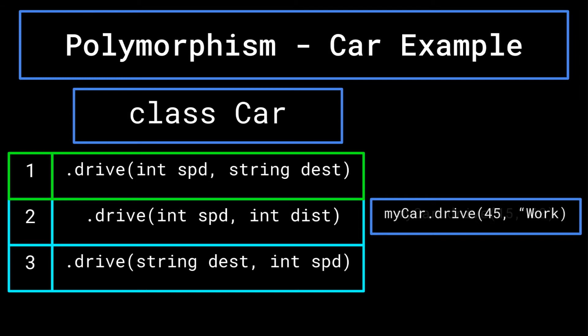Furthermore, my car dot drive 15, 60 would call drive method two, and my car dot drive school 30 would call drive method three. When implementing method overloading, the different methods tend to have separate but similar effects. Despite drive method one and drive method three taking the same parameters, it is likely that their implementation would be different, and thus would achieve separate effects. Otherwise, there would be no reason to have both methods.